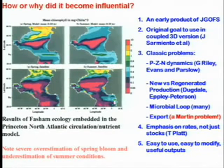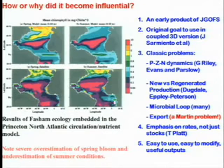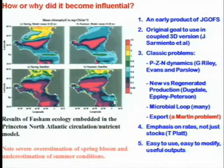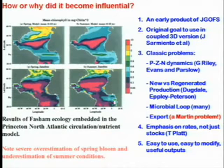Why did it become influential? It was an early product of JGOFS, which went on to be a very successful international research program. The model was conceived as a tool for JGOFS so people could look quantitatively at different processes and think about measurements needed in the program. The original goal was to couple it into the 3D Princeton circulation model by Jorge Sarmiento and colleagues, and just at that time those 3D models were maturing with the capability to embed ecosystem and nitrogen components. Our model was the first off the line in doing that.